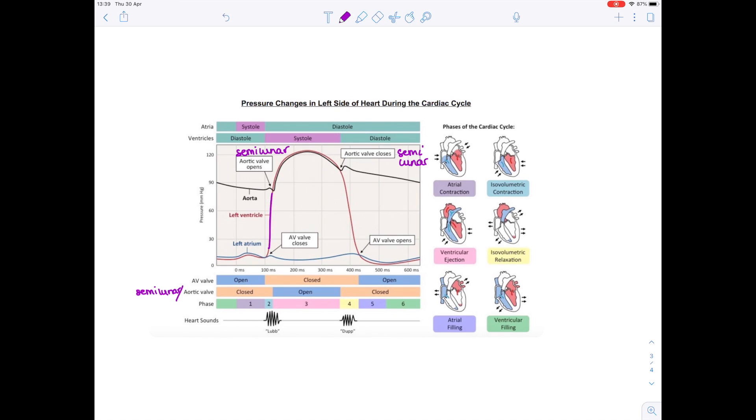And that semilunar valve is then going to open in order to allow blood to flow out of the ventricles into the arteries. So that's either the pulmonary artery or the aorta. Hence why you see the aortic pressure increasing because it's after all becoming filled with blood from the ventricles.